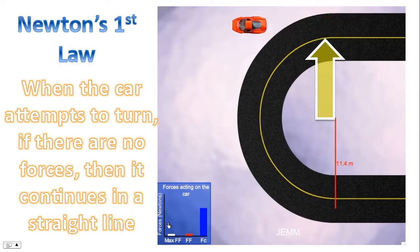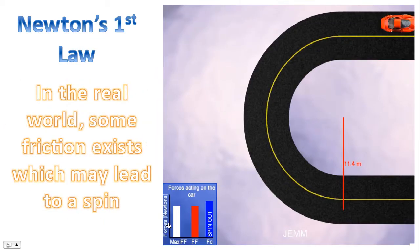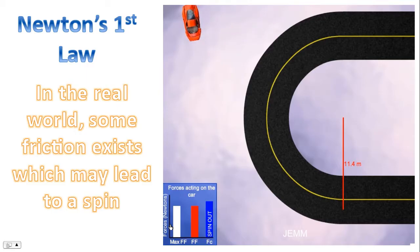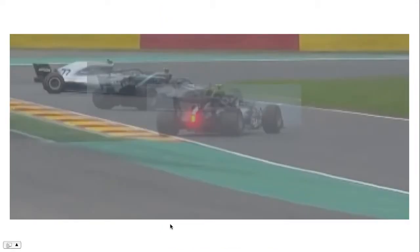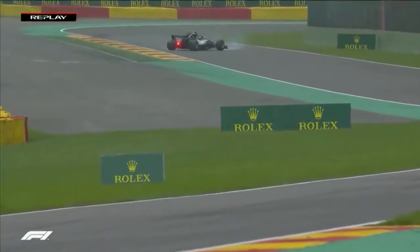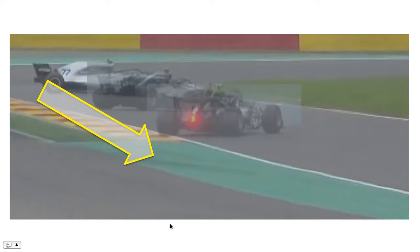Notice that without any forces, the car moves in a straight line. In the real world, however, some friction always exists, which may lead to a spin. You can see that here — notice the car moved in a straight line. We can also see that for the spin that occurred in this video. To drop it in Blondheim and not hit anything, that's a miracle. Notice that the car moves in a straight line; it just doesn't have enough force.